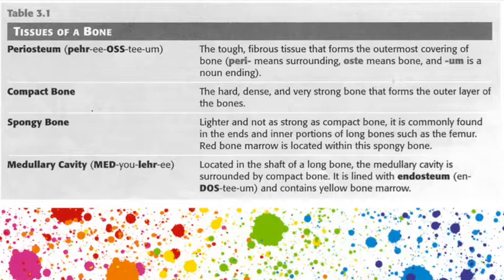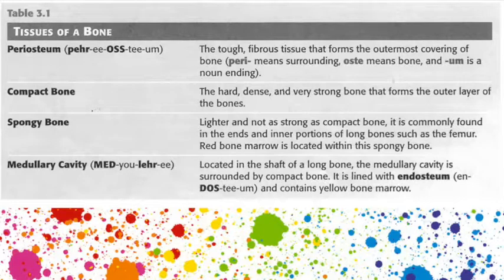Spongy bone is lighter and not as strong as compact bone, and is commonly found in the ends and inner portions of long bones such as the femur. Red bone marrow is located within the spongy bone. Finally, we have the medullary cavity, located in the shaft of the long bone. The medullary cavity is surrounded by compact bone, lined with endosteum, and contains yellow bone marrow.